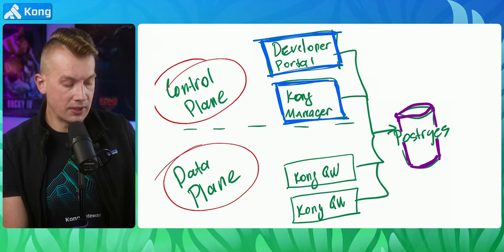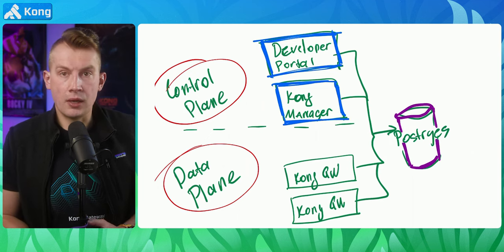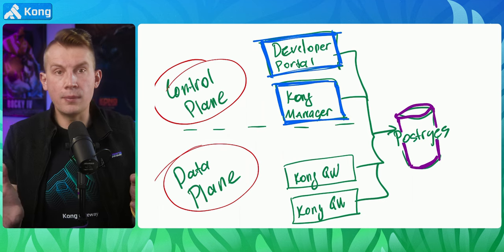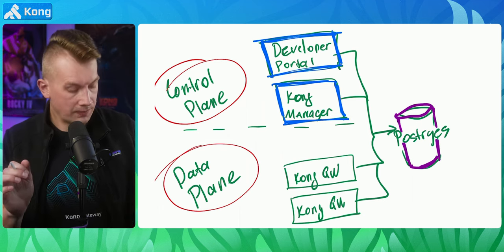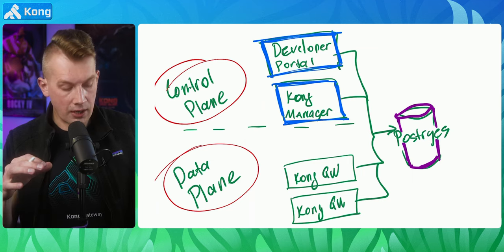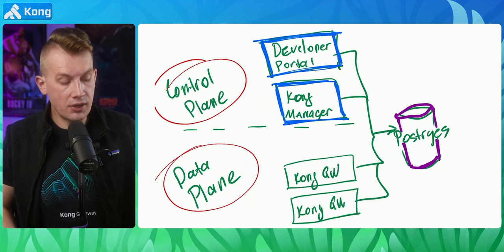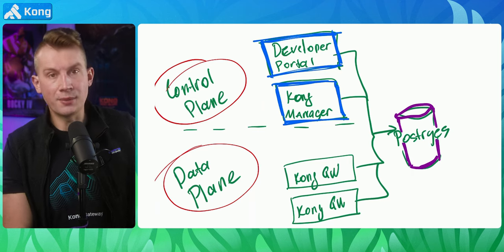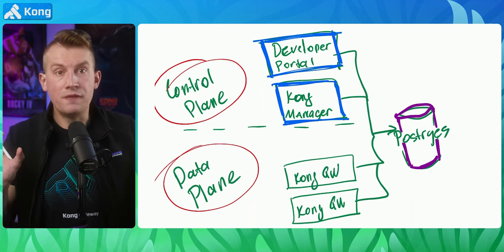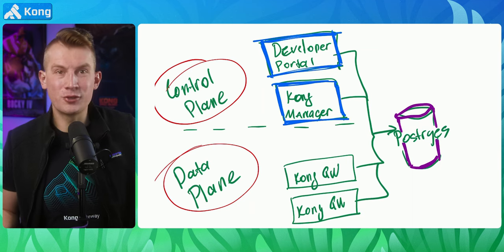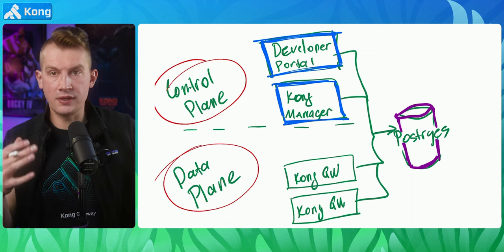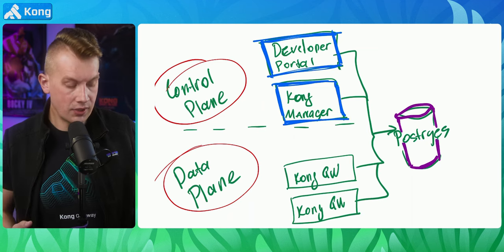This traditional deployment can be extended by adding Kong Manager for UI management and a developer portal for publishing services. Now we start seeing the database becoming a bottleneck. Gateways need to fetch configuration from the database. If configuration is changed through Kong Manager, there's a delay before changes are pulled back, creating some eventual consistency for configuration on Kong. A couple of years ago, we turned things around and introduced what we call hybrid mode.